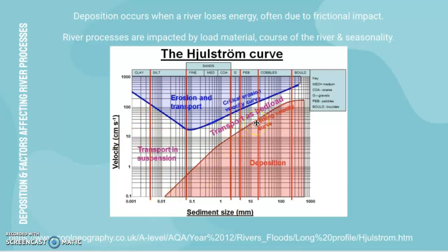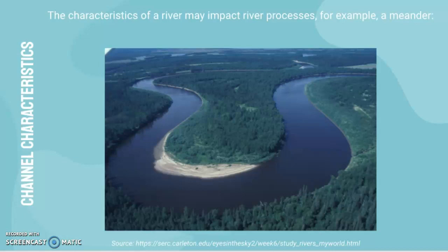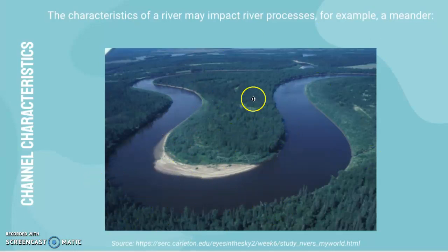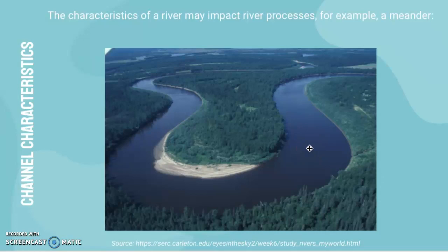Now we look at channel characteristics and how they impact river processes. On a meander, we have the river cliff where erosion mainly takes place, and the slip-off slope where deposition mainly occurs. This characteristic, which typically occurs in the middle to lower course of a river, leads to simultaneous river processes. Moving downstream, the river tends to lose energy at the delta and deposit — so different channel characteristics lead to different processes in different areas.